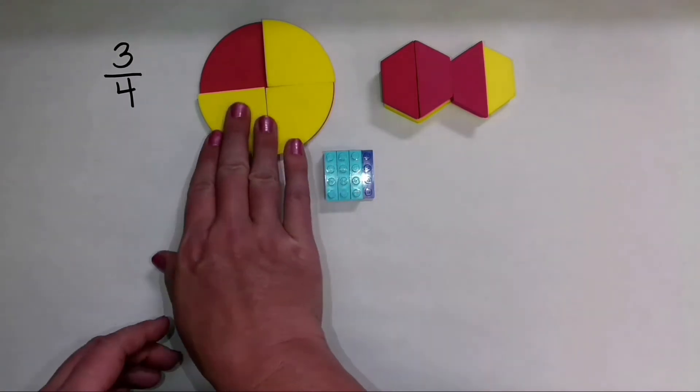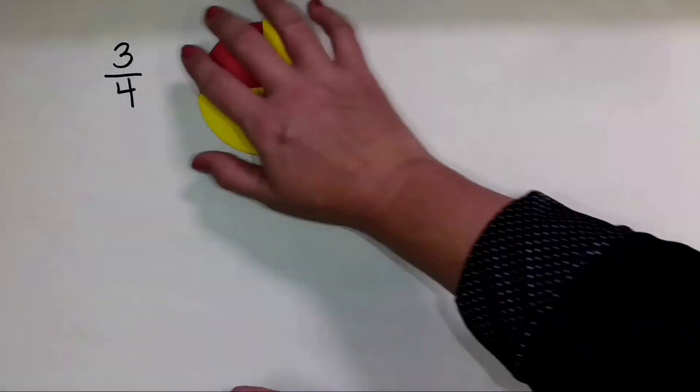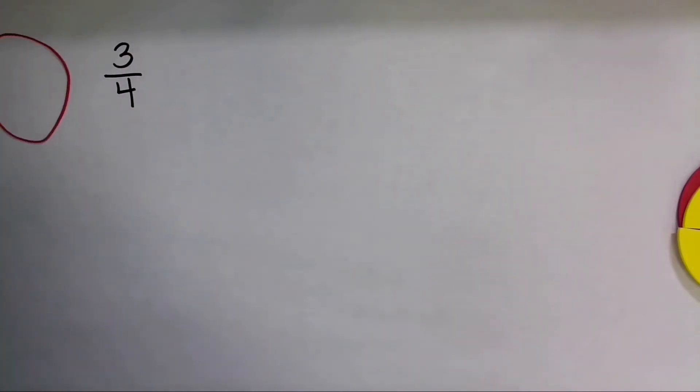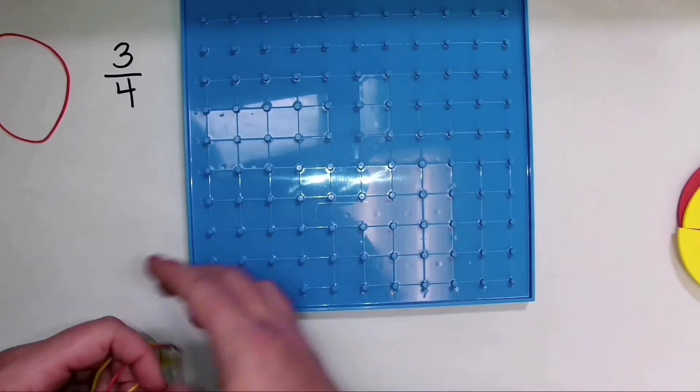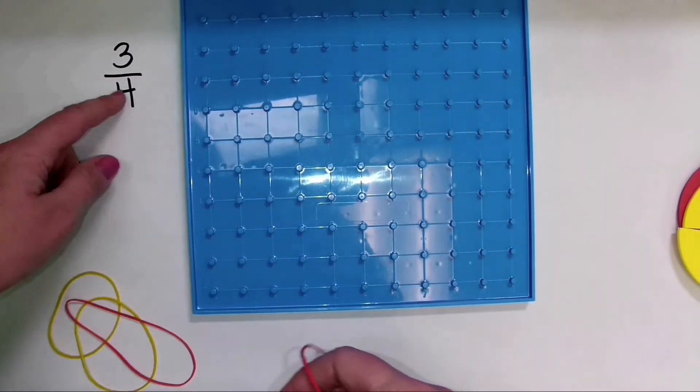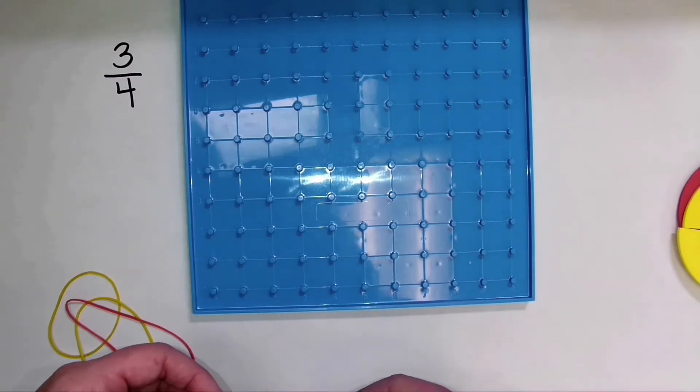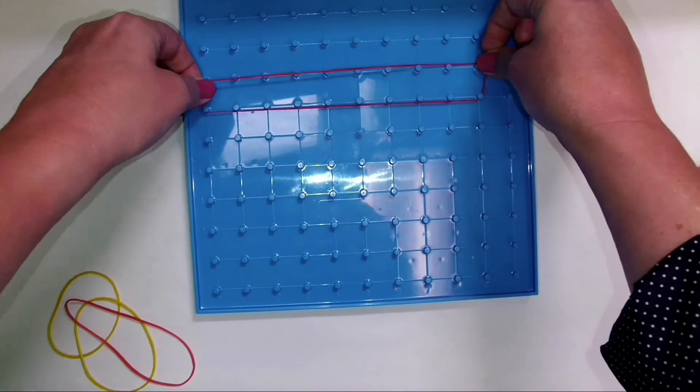Now, in addition to the fraction circles, and the pattern blocks, and my Legos, we can also show the fraction 3 fourths using a tool like our geoboard. So I have a blue geoboard. I'm just trying to get my rubber bands here. All right, here is my geoboard there, and I want to show the fraction 3 fourths. So first, that means I need to show an area with four equal parts.